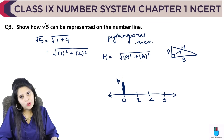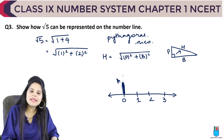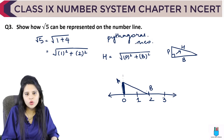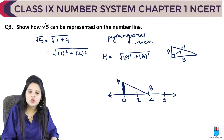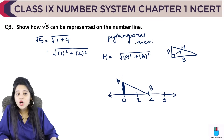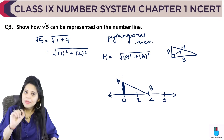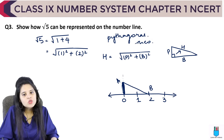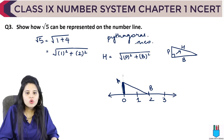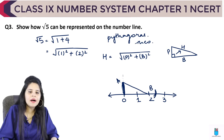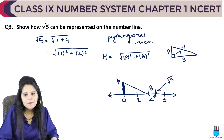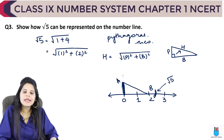Now, the hypotenuse is 2. Join point A to point 2 on the number line and call it B — this gives a triangle with base 2 and perpendicular 1. Open your compass from point B to the origin, then mark an arc from 0 on the number line. That point on the number line is √5.